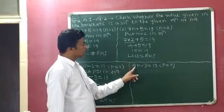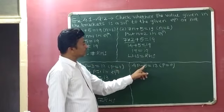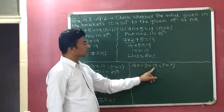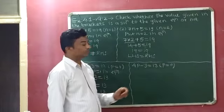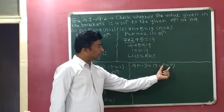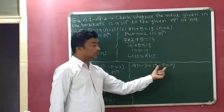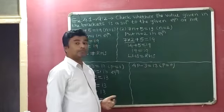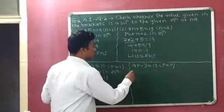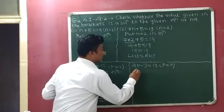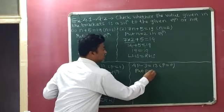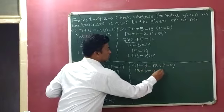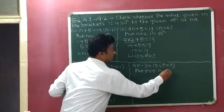Next part: 4P minus 3 equals 13, with P equals 0 as the solution given. First, we will substitute P equals 0 into the given equation.